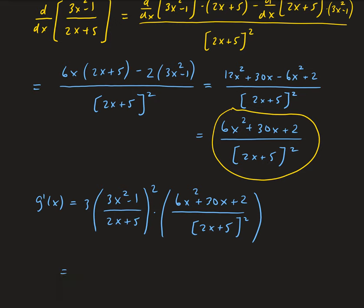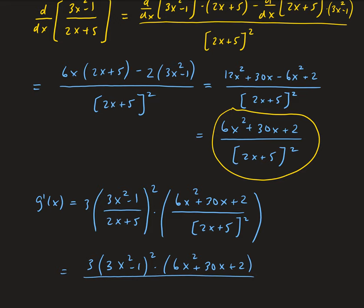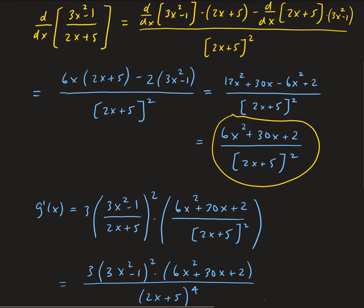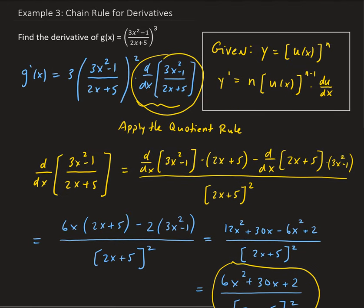We can actually rewrite this. Since we have 2x plus 5 and 2x plus 5 squared in the denominator, we can combine them. So we have 3 times 3x squared minus 1 to the power 2, times 6x squared plus 30x plus 2, all divided by 2x plus 5 to the power 3 times 2x plus 5 squared, which is 2x plus 5 to the power 4. That is our derivative for the function. So again, we take care of the outside power first, then take the derivative of the inside — and sometimes you may have to use the quotient rule or the product rule combined with the chain rule, as in this example.